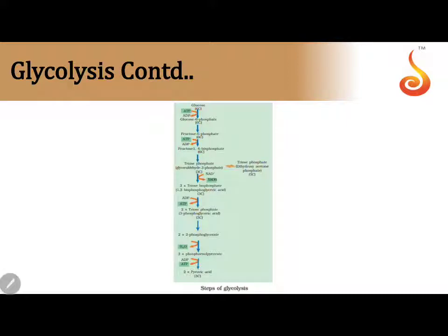In the next reaction, glyceraldehyde 3-phosphate is converted to 1,3-bisphosphoglyceric acid. It underwent a dehydrogenation — the aldehyde group is converted to a keto group, so hydrogen is removed. The enzyme here is dehydrogenase. You can see NAD is reduced to NADH because hydrogen is removed from the aldehyde group. A phosphate is added, giving 1,3-bisphosphoglyceric acid.